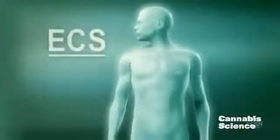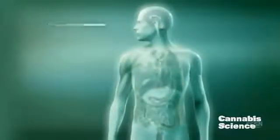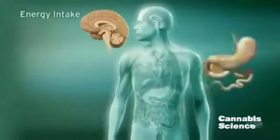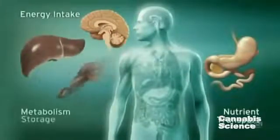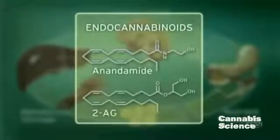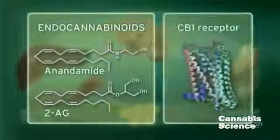The endocannabinoid system, or ECS, influences multiple physiologic processes. This intricate system modulates energy intake, as well as nutrient transport, metabolism, and storage. The ECS regulates these processes through endogenous ligands, such as anandamide and 2-arachidonylglycerol, and the CB1 receptor.